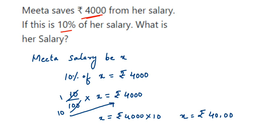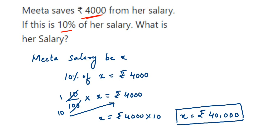So X is equal to rupees 40,000. This means her salary is 40,000, and 10% of 40,000 is 4000, which is her savings. I hope this question is clear. In case you have any other question or doubt, you can drop a comment. Thank you so much for watching.